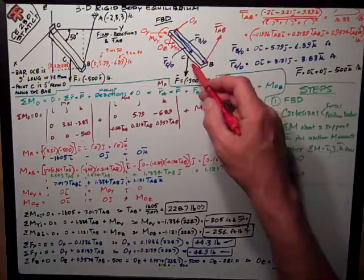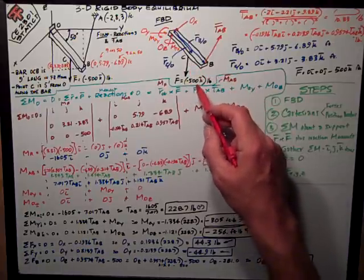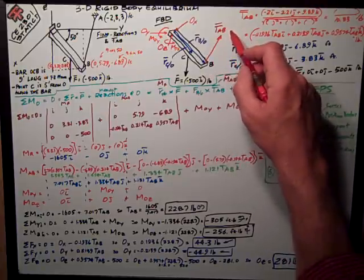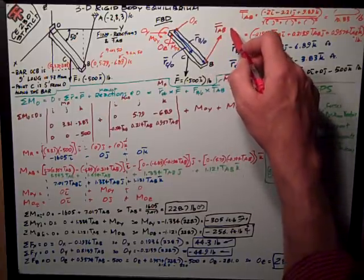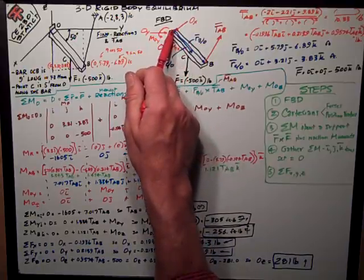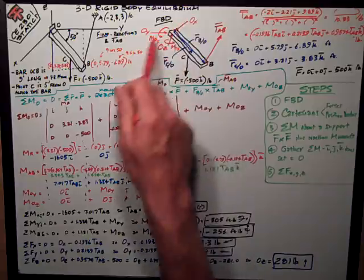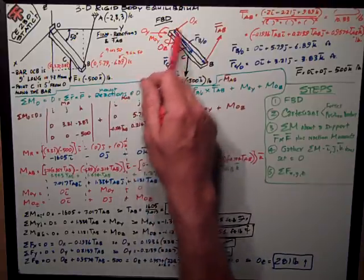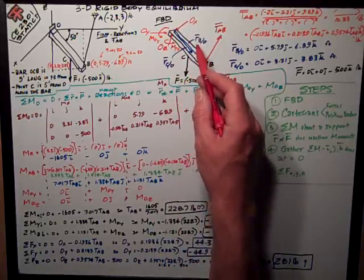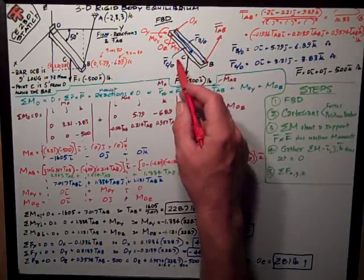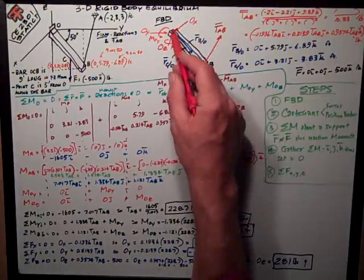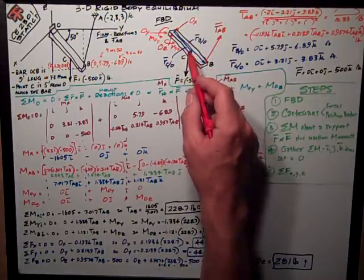Then I put my two forces, both the known one, negative 500K pounds down at point C, my unknown force in the cable, TAB as I've called it, acting at point B. And then two position vectors, because I'm going to take moments about point O to eliminate some of these forces, all of the straight forces. So I've got RBO, position vector from O origin to point B, or CO from the origin to point C.